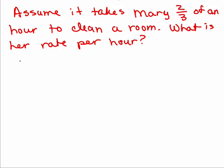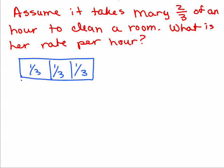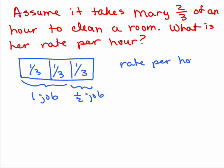All right, so there's different ways you might consider this. You might say, well, let's break an hour up into 3 parts. So in 2/3 of an hour, she gets 1 job done, right? And then she gets a half a job done in the next 1/3 of an hour. So she actually gets 1.5 jobs done. So her rate per hour, that means how much does she get done in 1 hour, rate per hour, is 1.5 or 3/2.